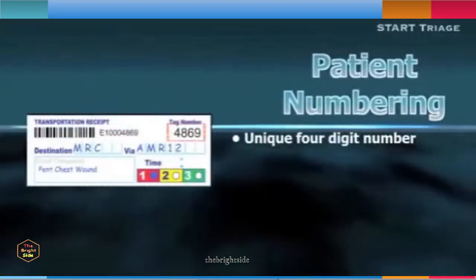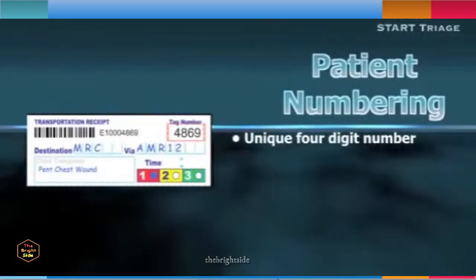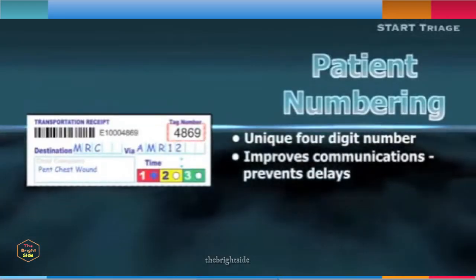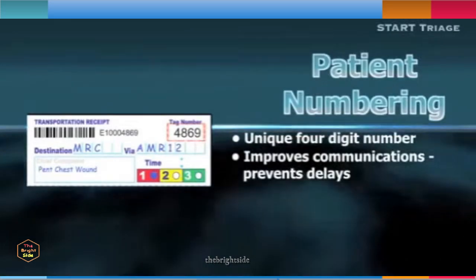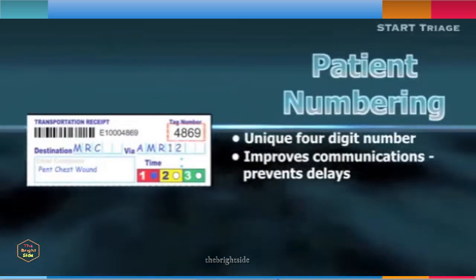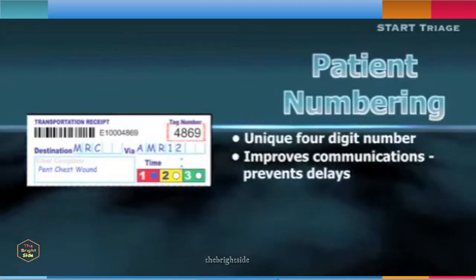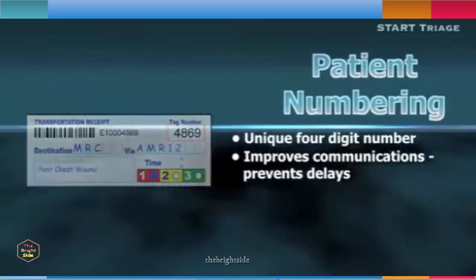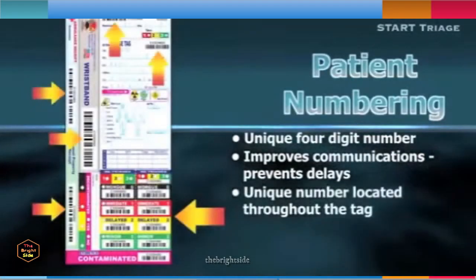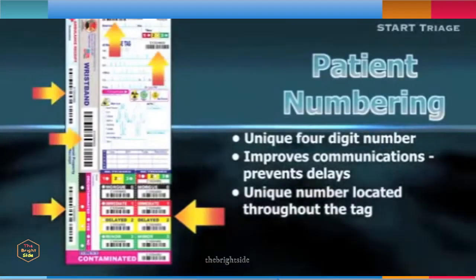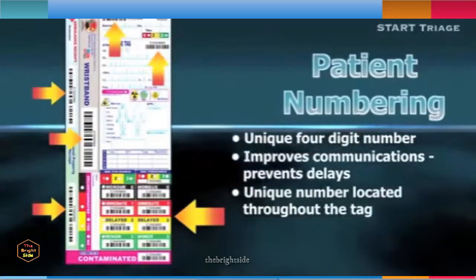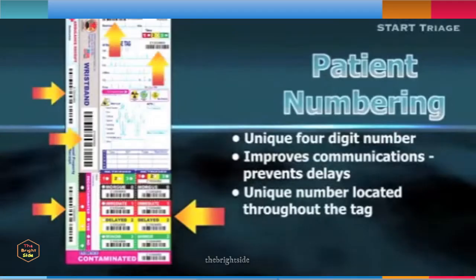Each transportation receipt has a unique four-digit number in the upper right corner. This is the patient identification number. In the county of San Diego, this number is to be used in all communications when referring to the patient. The simplified format will prevent delays or errors inherent in other numbering systems. The unique four-digit number can be found on all components of the triage tag for full reference through the treatment, transport, and hospital admissions process.